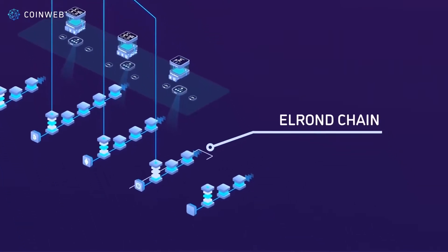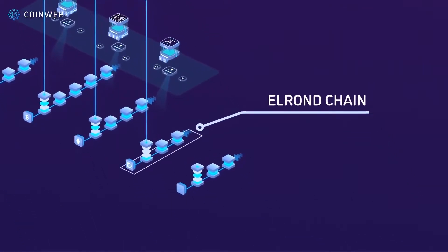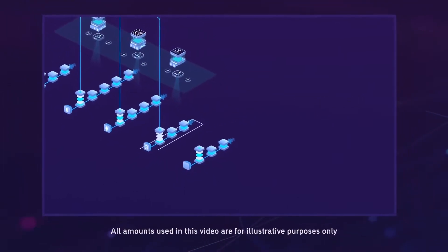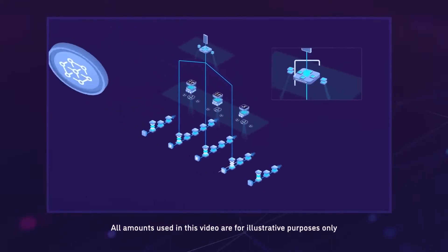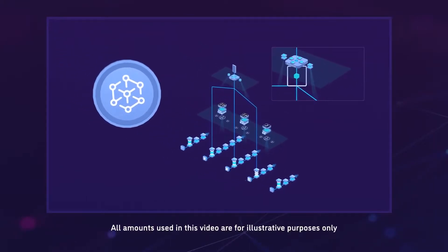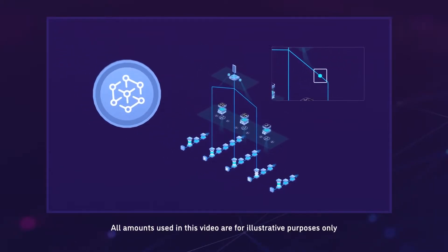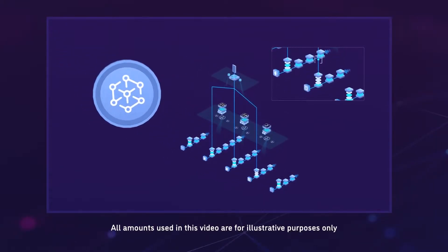We'll show how these transactions are embedded into Elrond as their chosen underlying L1 blockchain, and how the C-Web token facilitates the movements and processing of these transactions.